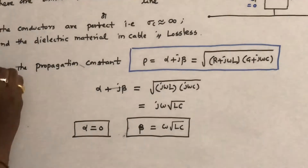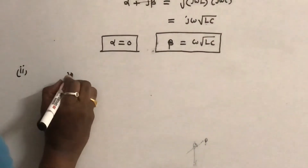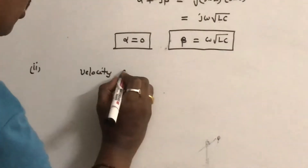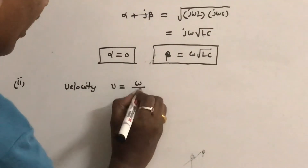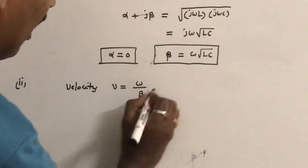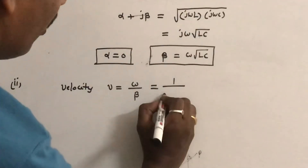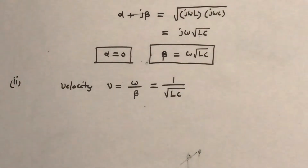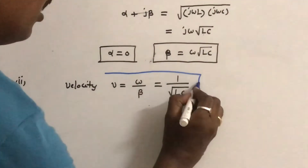The second parameter is the velocity of the wave in a lossless cable. The velocity v = ω/β. From this relation, the velocity of the wave in a lossless transmission line is v = 1/√(LC).